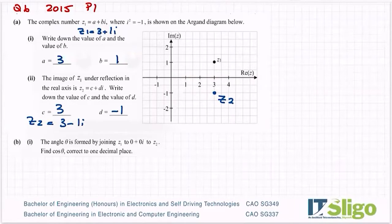The angle theta is formed by joining z1 to 0 plus 0i which of course is the origin. Let's join them together and by joining to the origin to z2, the angle theta is formed. So this must be theta in here because it's the only angle that's in there. Find cos theta correct to one decimal place. So this is mixing trig into it.